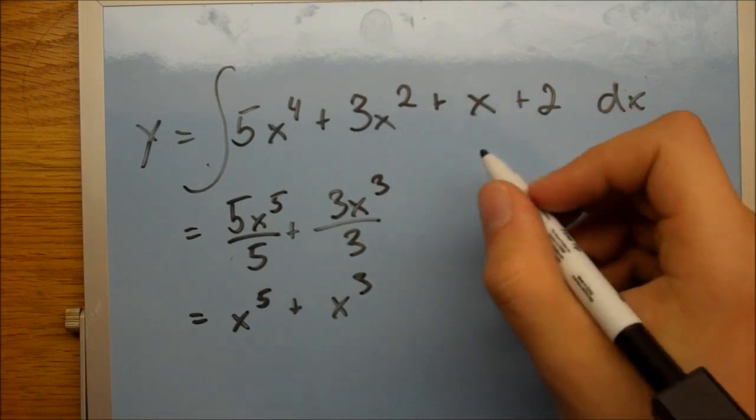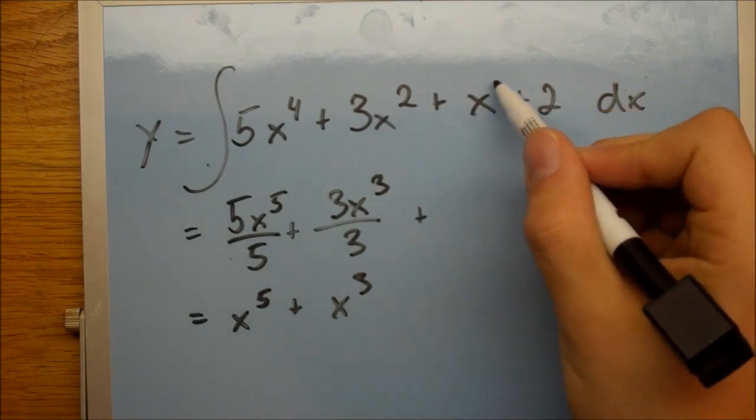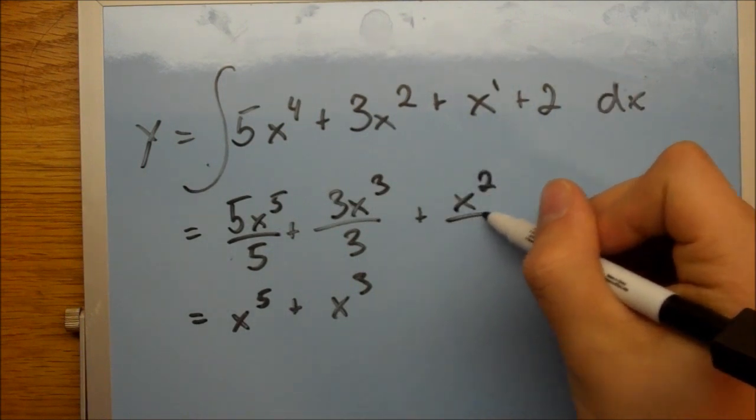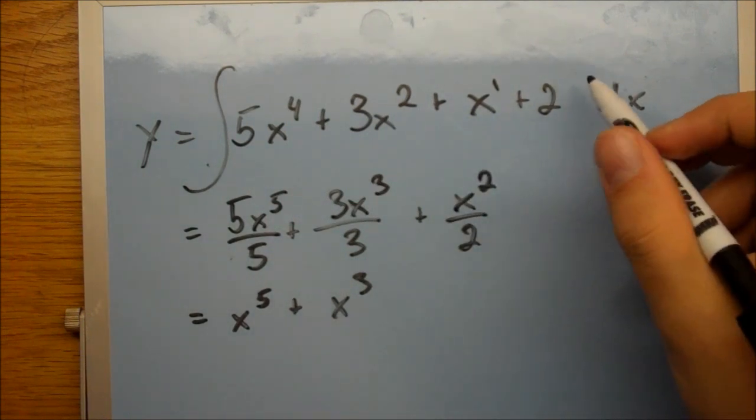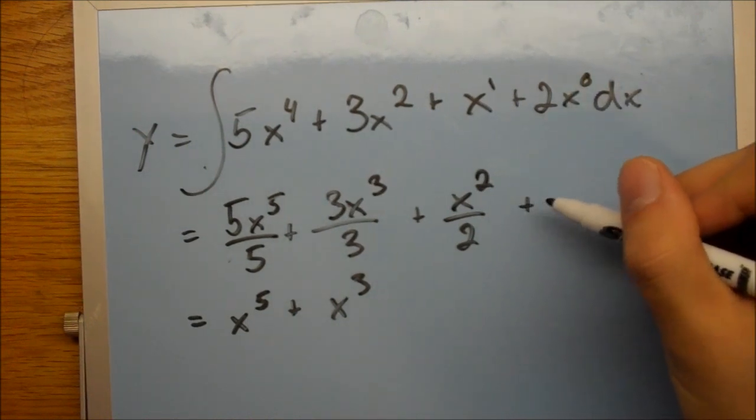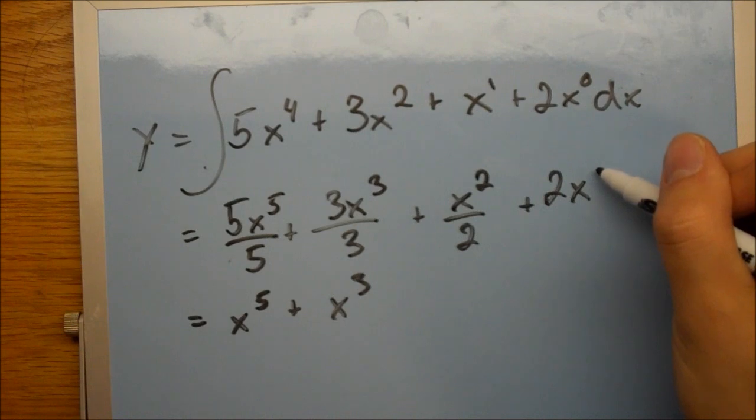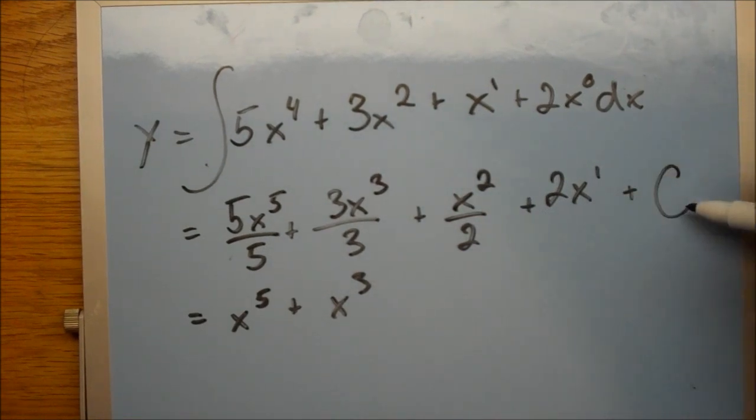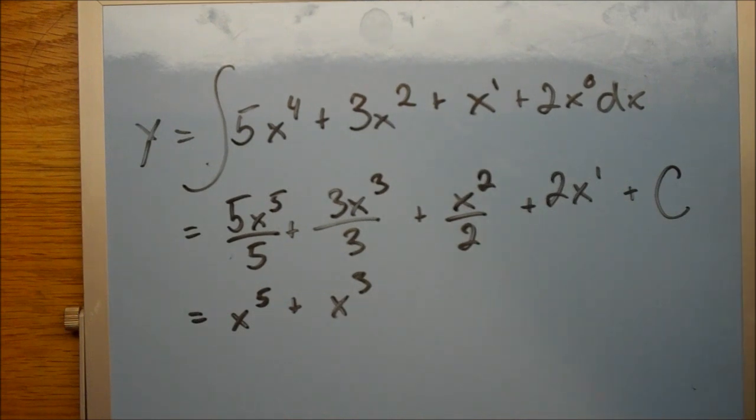Then you have x to the 1, and you add a power to that, so it becomes x squared over 2. And then here we technically have an x to the 0, so that becomes an x to the 1. And then you have to add a value of c, because when we did the derivative, the constant went away, so we have to account for that.